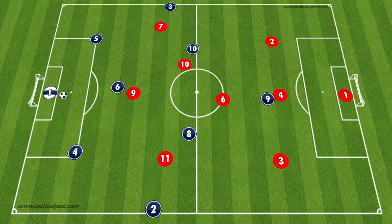Hey everybody, thanks for checking out the second part of this video series. We are talking about how we're going to play this year and the shape in which we're going to play. The first video was talking about how we build out of the back — how we take the ball from our goalkeeper and move it into the middle third of the field. This video is going to be talking about how we take the ball from the middle third and get it to the final third — our attacking third — where we can get it into dangerous places.